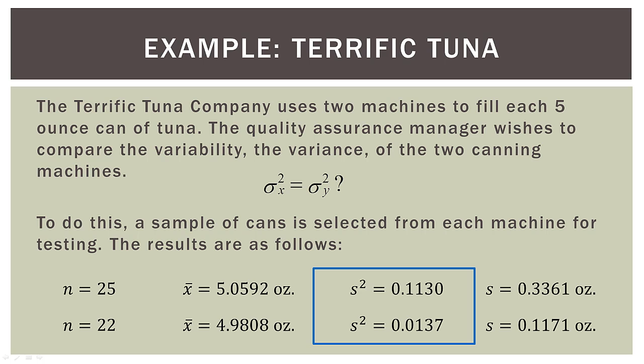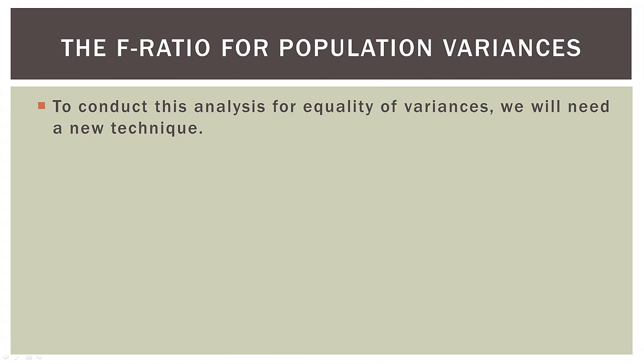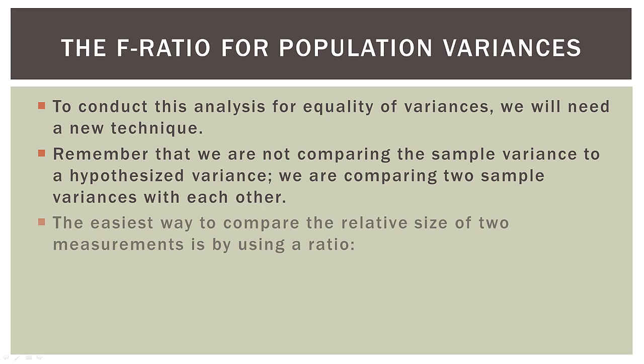If you look at these, you can see that the variance for machine one is quite a bit higher than it is for machine two. But remember, these are samples, so there is going to be sampling error. So we need to know if this difference is statistically significant, or just related to sampling error. To conduct this analysis for equality of variances, we will need a new technique. We are not comparing the sample variance to a hypothesized variance — we are comparing two sample variances with each other. The easiest way to compare the relative size of two measurements is by using a ratio.